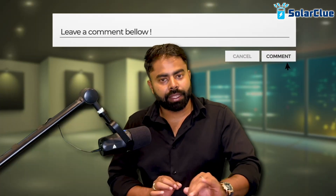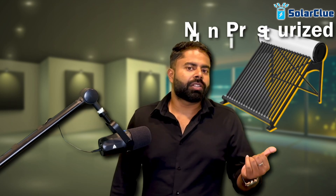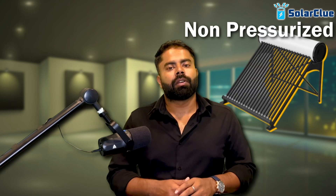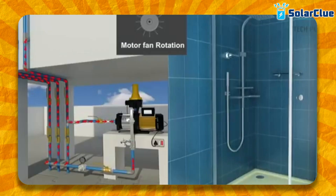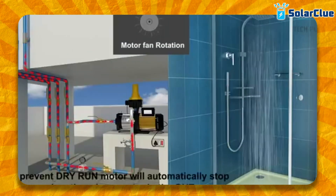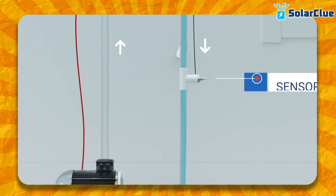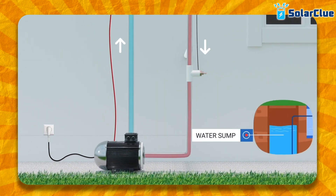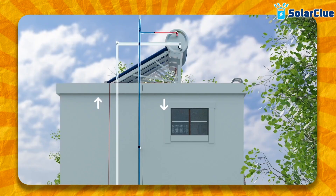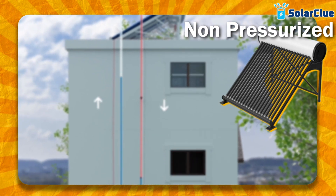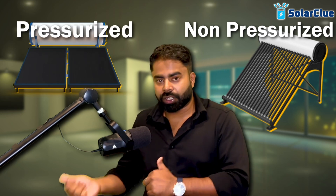Simple logic: buy non-pressurized if you don't have a pressure pump on the terrace; buy pressurized if you do have one. For villa communities with a centralized pumping system that pumps water directly to your bathroom at good pressure, you need a pressurized heater. But if the community pumps water to an underground sump and then to an overhead tank which feeds the bathroom by gravity, you need a non-pressurized heater.